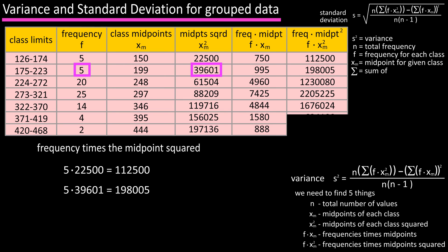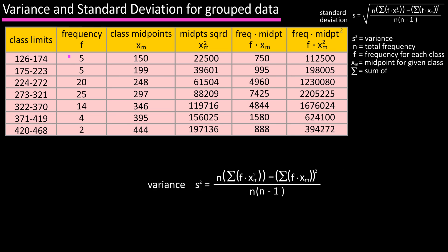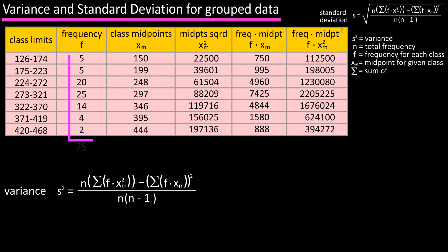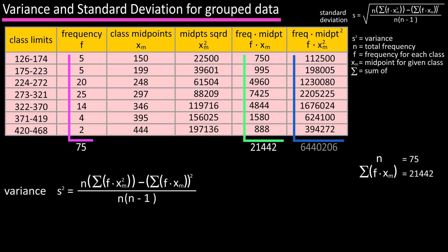Now we total up the columns. The total frequencies from column 2 equal 75, which is our n value. The total of column 5 (f × xm) equals 21,442. The total of column 6 (f × xm²) equals 6,440,206.